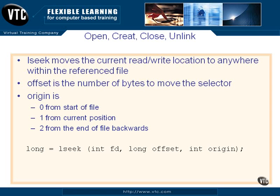So then you have to select an origin. The origin can be 0, meaning we're going to take an offset jump from the start of the file. If the origin is 1, we are going to move forward a number of bytes. And if you use a negative number with 1, you will back up in the file from your current position. And if you select a 2 for your origin, that goes to the end of the file and runs backwards. So if you want to rewind a file, you can do lseek 0, 0.